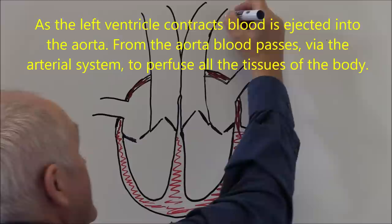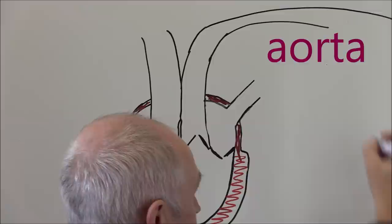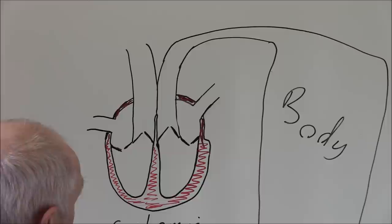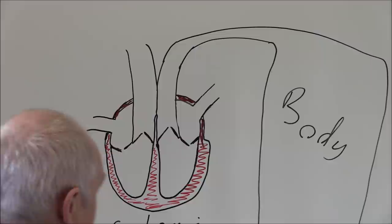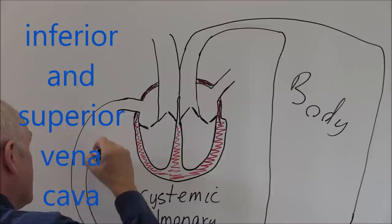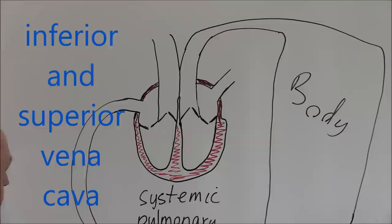The aorta will divide into smaller arteries taking blood to all of the body — the brain, kidneys, liver, and all of the major organs. Once the blood has circulated through the body it's going to return via the inferior and superior vena cava draining back into the right atrium.